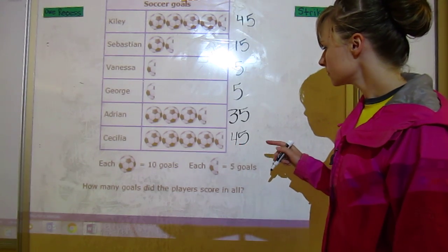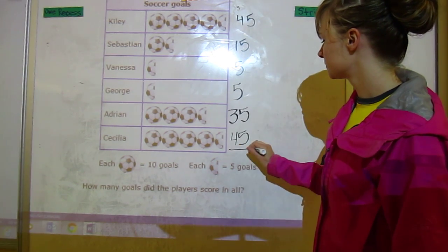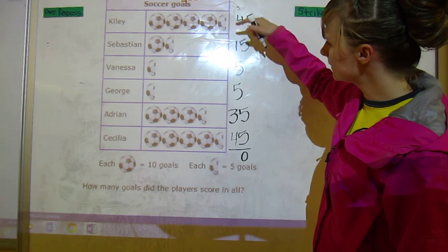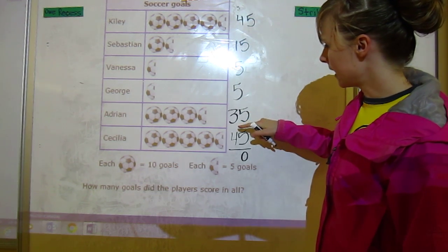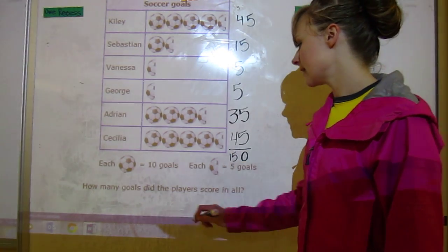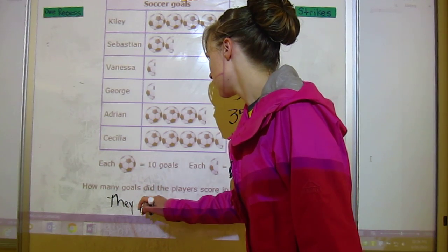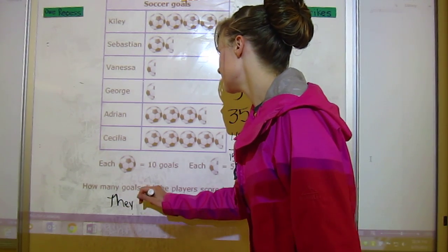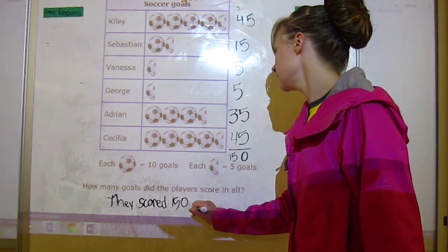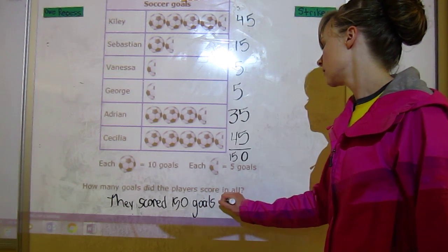So now we figured out what each one did. Now we can add them all up. So we've got five, ten, fifteen, twenty, twenty-five, thirty, and then we've got four that's seven, eight, nine, ten, eleven, fifteen. So that means that the players scored one hundred fifty goals all together.